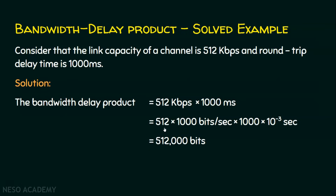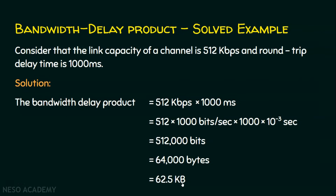Since the result is in bits, we convert to bytes. Since 8 bits constitute 1 byte, dividing 512,000 bits by 8 gives 64,000 bytes. We then convert to kilobytes: 1 kilobyte equals 1024 bytes, so dividing 64,000 bytes by 1024 gives approximately 62.5 kilobytes. So the bandwidth delay product is 62.5 kilobytes — the capacity of the link after 1000 milliseconds.